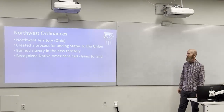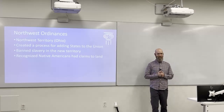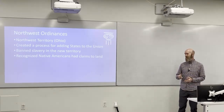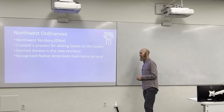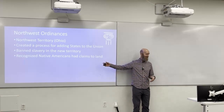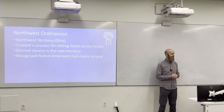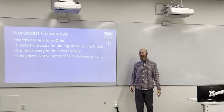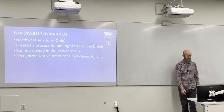The Northwest Ordinances did two important things they like to ask about on the test. First, it created a process for adding states to the Union — we started with 13 and now have 50. Second, it banned slavery in the new territory. Slavery was a contentious, highly debated issue from the very beginning of America. The Northwest Ordinance also recognized that Native Americans had claims to land, though in practice those rights were later violated.